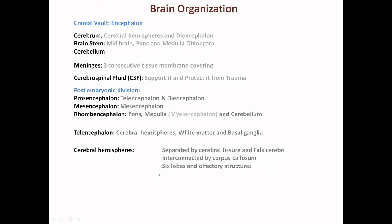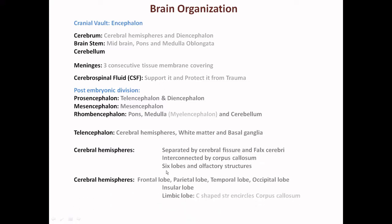The cerebral hemispheres have six lobes and olfactory structures. The six lobes are the frontal lobe, two parietal lobes, two temporal lobes, one occipital lobe, the insular lobe, and the limbic lobe — a C-shaped structure surrounding the corpus callosum, which joins the two cerebral hemispheres.